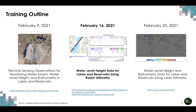Last week in the first session we saw basic information about lakes and reservoirs. Then we had an overview of remote sensing observations relevant for monitoring water extent, water level height, and bathymetry. We focused on water extent datasets including MODIS-based water mask, HydroLakes derived from the Shuttle Radar Topography Mission, and high-resolution lake extent data from Landsat derived by the Joint Research Center. We also had a demonstration by Sean McCartney on how to access Landsat-based water extent data — that is, Global Surface Water.